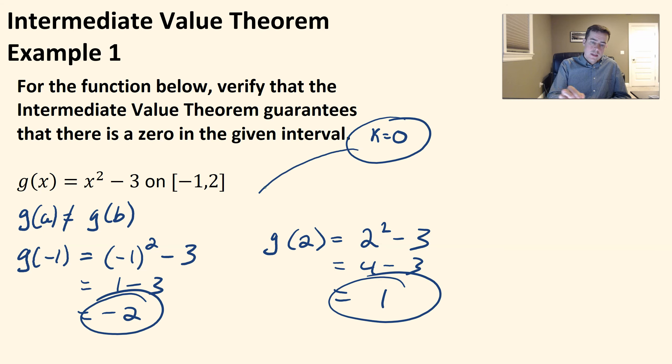Since this zero is between negative two and one, this guarantees that there will be a zero in this interval. And that's all.